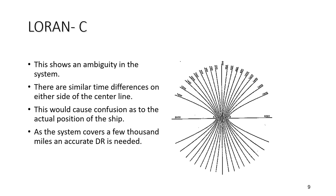Chains are identified by their group repetition interval, which is the time between the start of a master station's group of pulses and the next start of that master station's group of pulses. A diagram is used to illustrate what is meant by the group repetition interval and how it is identified.